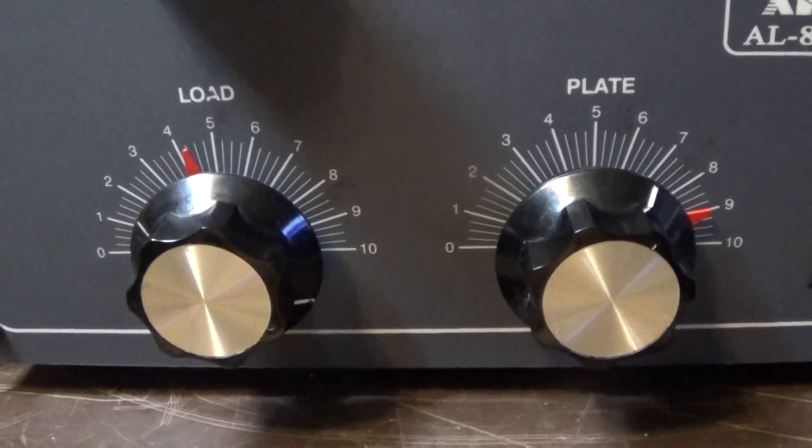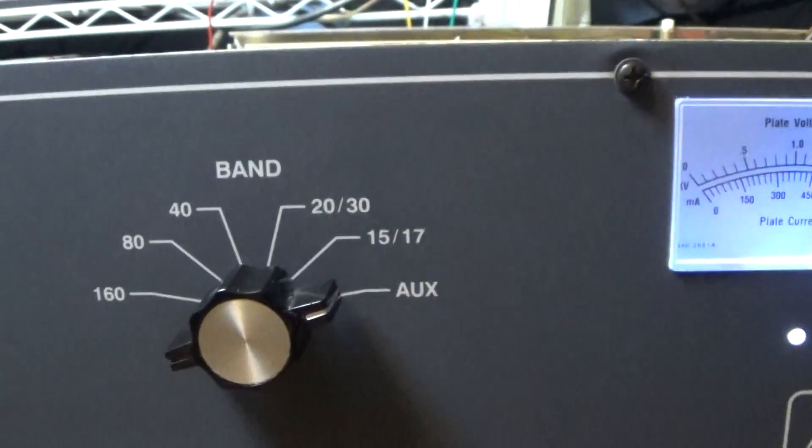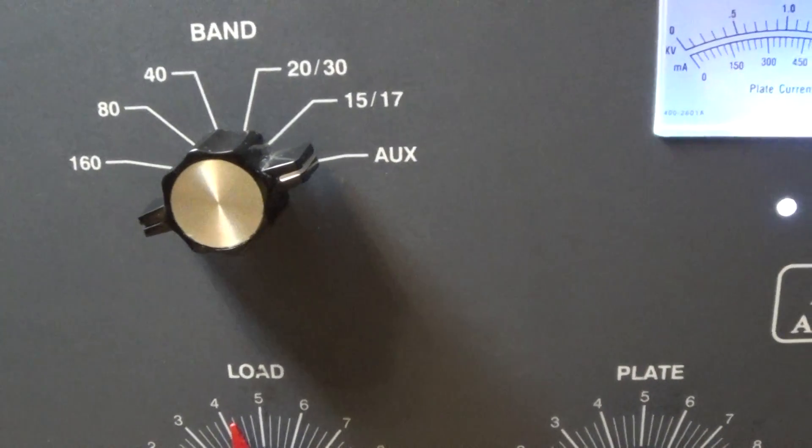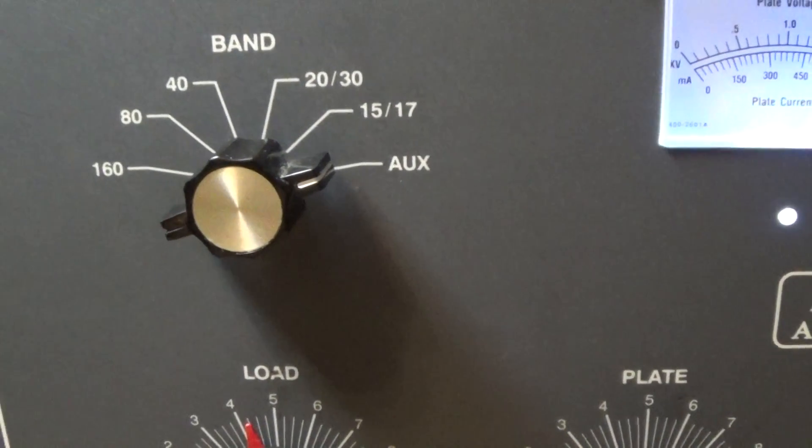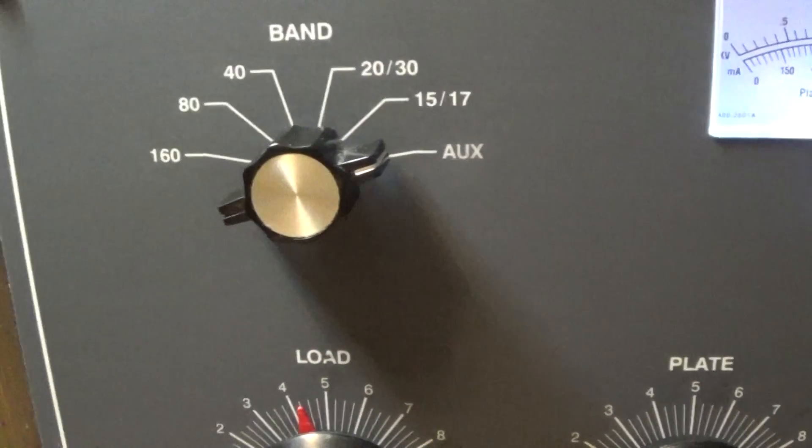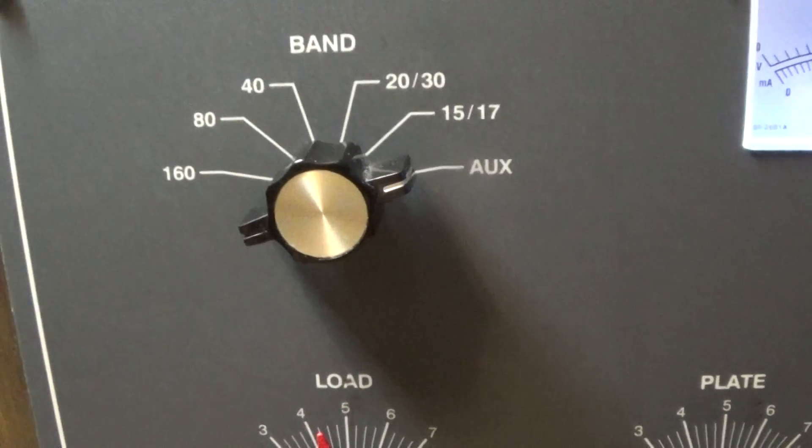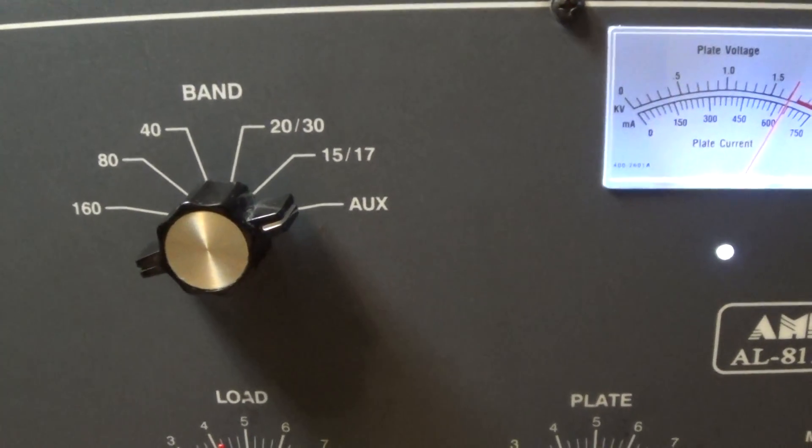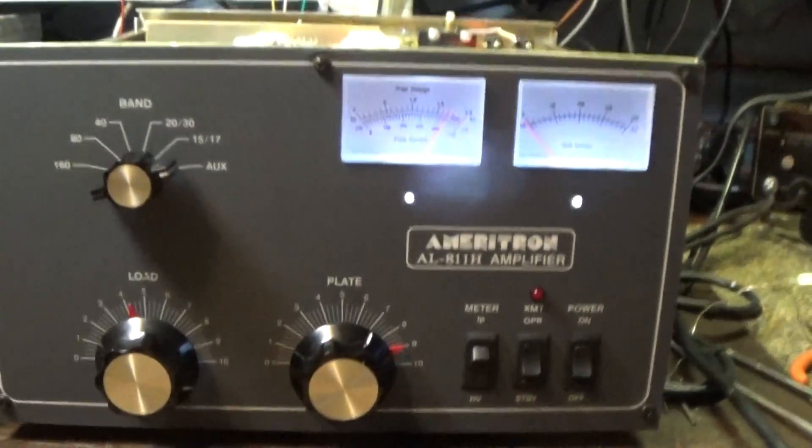Standard tuning load and band switch with 160 through 10-12 meters. The auxiliary comes from the factory with 10 and 12 meters disabled and they say if you write the company that they tell you how to modify it for 10-12 meters, but it's actually very easy.